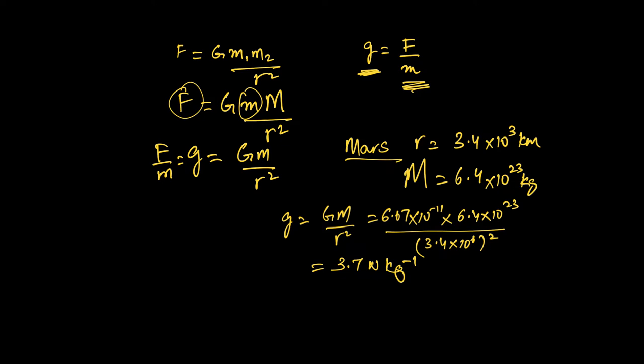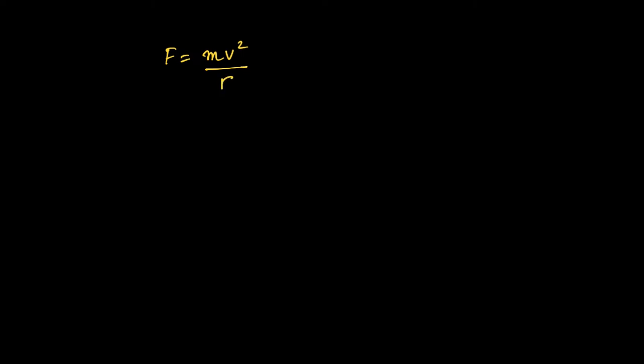That brings us to the end of this point of discussion. I want to talk about gravitational force between point masses and how we can use it to discuss circular orbits, including geostationary orbits of satellites. Just recall: if you haven't seen the video on centripetal force, I recommend you watch chapter 7. The centripetal force equation is F equals mass times linear velocity squared divided by the radius of the circle.